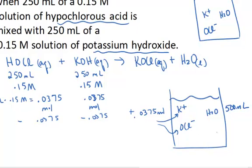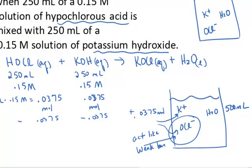Now, this particular acid — hypochlorous acid — is a weak acid, so that tells me that the hypochlorite ion is the conjugate base partner of that weak acid. It's the acid minus the proton, so it's the conjugate base partner, which means this particular conjugate base is going to act like a weak base in water. The potassium ion, on the other hand, is the conjugate partner of a strong base, so it's not going to have any acidic properties whatsoever — it's just going to be a spectator. So what's going to control the pH of the solution is the concentration of the weak base.